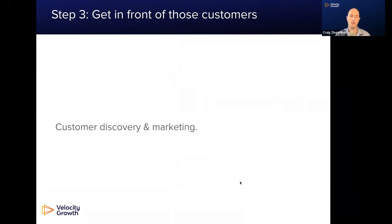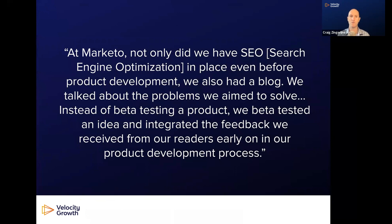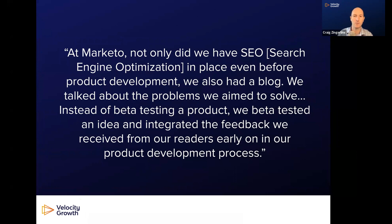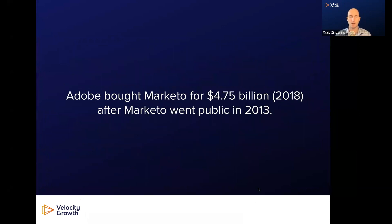Once you figure that out, step three is to get in front of those customers. I love this example from Marketo. At Marketo, not only did we have SEO optimization in place even before product development, we also had a blog. Before Marketo did anything with their product, they started marketing. We talked about the problems we aimed to solve. Instead of beta testing a product, we beta tested an idea and integrated the feedback we received from our readers early on in our product development process. Adobe bought Marketo for $4.75 billion in 2018 after Marketo went public in 2013 — an awesome example of a huge company that literally started going to market before they even had a product.